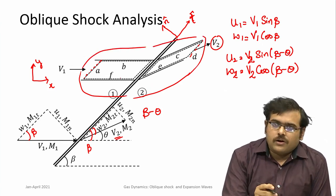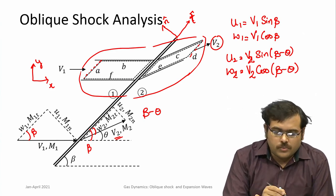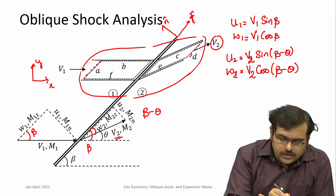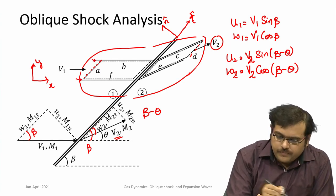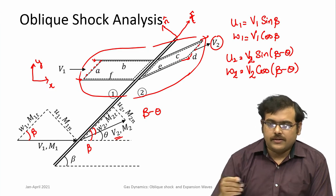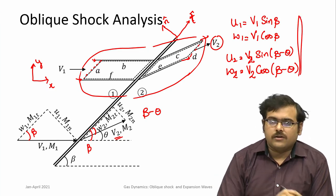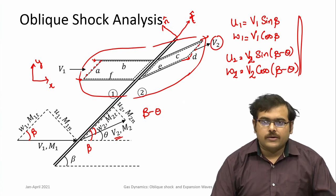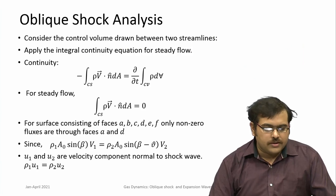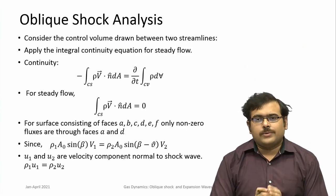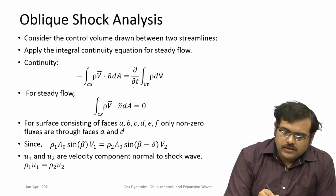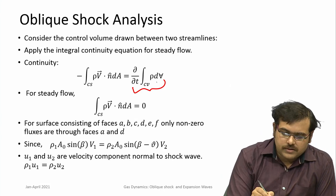The control volume is drawn very close and fitting with the shock wave — it is a stream tube bounded by streamlines. With this understanding of the velocity decomposition, let us proceed with the control volume analysis across the oblique shock, starting with the continuity equation for steady flow.